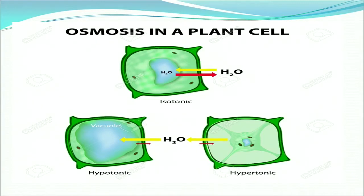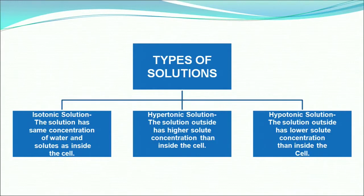Here is an illustration of how osmosis takes place in a plant cell. If the outside solution is more concentrated, osmosis will take place from the cell to the outside, which is called exosmosis. This illustration shows three figures: one in isotonic solution, one in hypertonic solution, and one in hypotonic solution. In hypotonic solutions, the outside has lower solute concentration than inside the cell. In hypertonic solution, the outside has higher solute concentration than inside the cell. In isotonic solution, the concentration of water and solutes is the same as inside the cell.